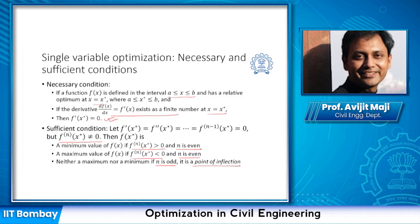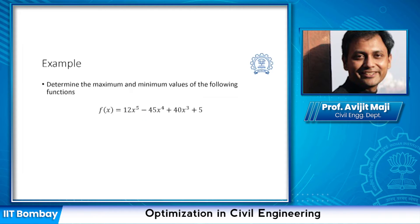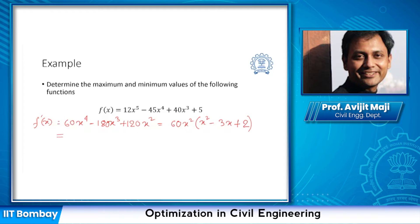Now we'll look into a few examples to understand this process better. The first example is a single-variable function and we need to find the maximum and minimum. As per the necessary condition, we look into the first order derivative: f'(x) = 60x⁴ - 180x³ + 120x², which equals 60x²(x-1)(x-2), and this must be zero for an optimum point.